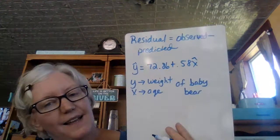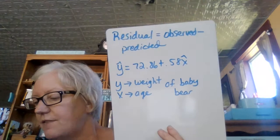Let's say it's a baby bear — I just made this up. So the question is: what is the residual for a baby that weighs 68 pounds at six months? What is the residual for a baby that weighs 68 pounds at six months?